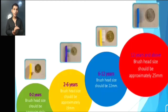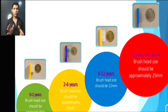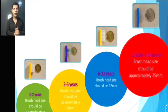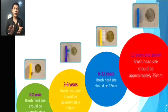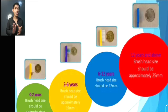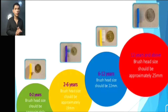They have given examples of how long the brush head should be. For ages 0 to 2 years, the brush head should be approximately 19 mm. For 6 to 12 years, the brush head should be 22 mm. For 12 years and above, the toothbrush brush head should be approximately 25 mm.